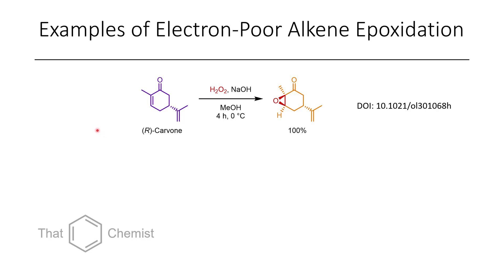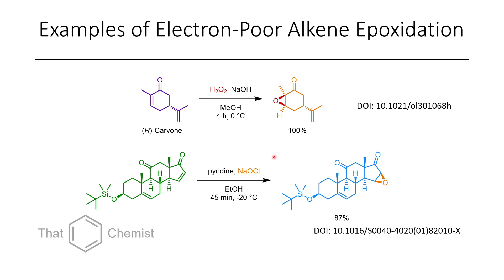Some examples of the oxidation of electron-poor olefins include the treatment of carvone with hydrogen peroxide in basic methanol, where the epoxide is formed in quantitative conversion. Another example is the use of sodium hypochlorite in ethanol and pyridine to selectively epoxidize a specific position of this Michael acceptor in the presence of another alkene. Additional ketones and a protected alcohol were also tolerated in this steroid core.